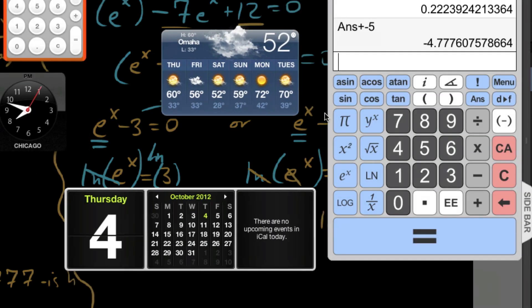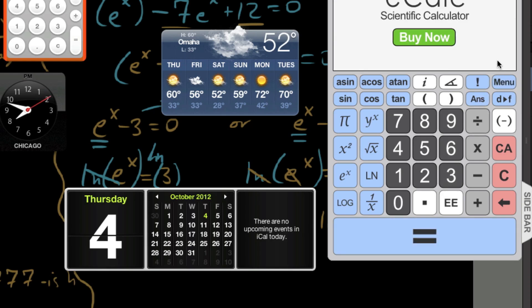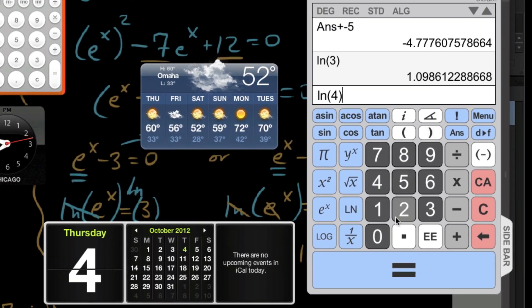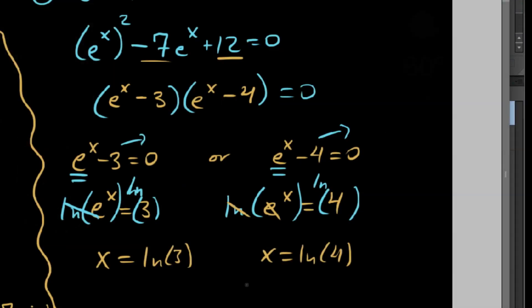We'll go ahead and check these on the calculator. So we say ln of 3 equals and ln of 4 equals. So we get about 1.09 or 1.10 and 1.39. So we get approximately 1.10 and 1.39, respectively. So a couple of quick examples on how to solve some more complex exponential equations.